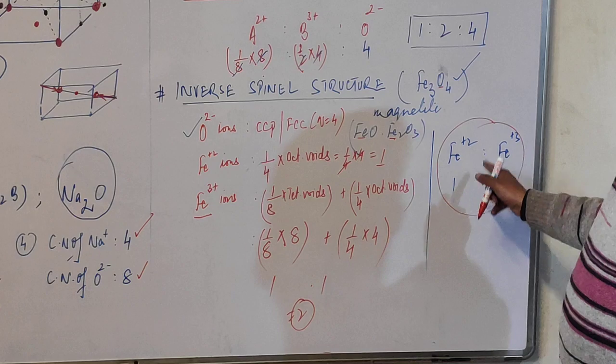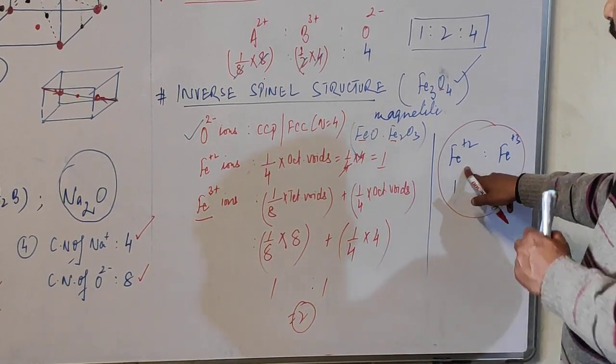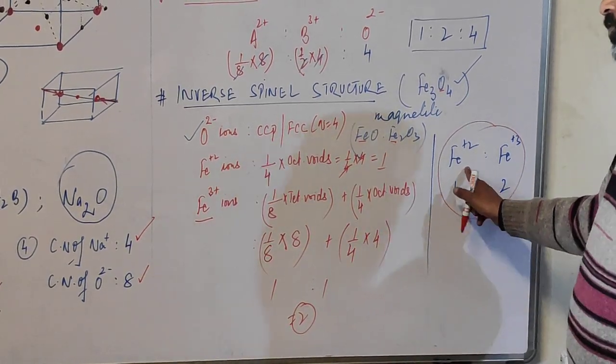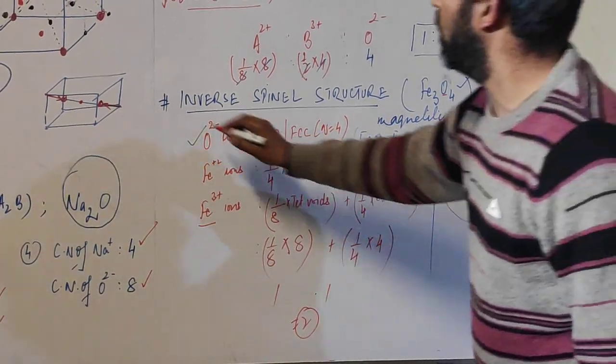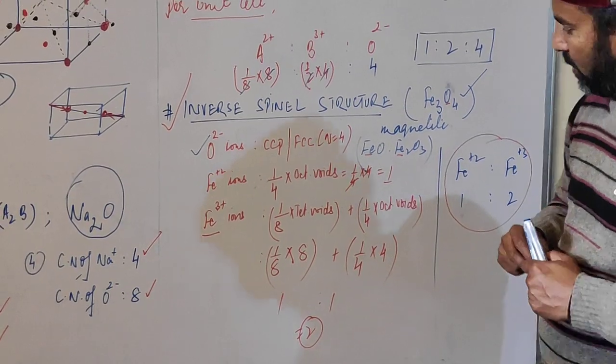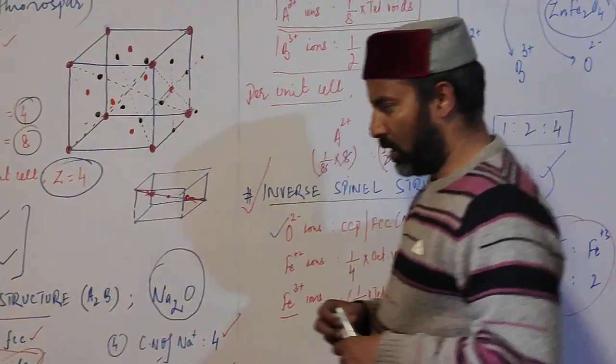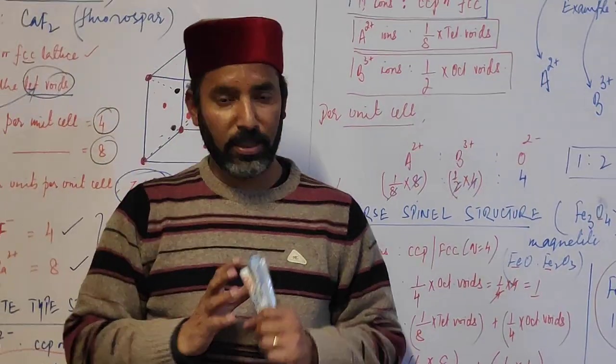That means originally three positions would have ferrous ions, but due to some defect, two-thirds of these positions get ferric ions, then your inverse spinel structure forms. So students, this is it.